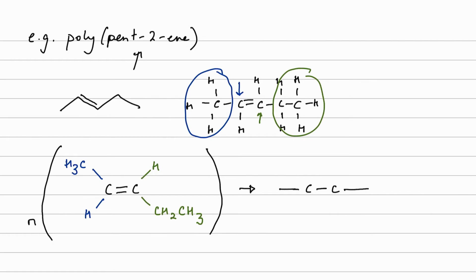We have got CH3 above, hydrogen below. Second carbon, hydrogen above, CH2, CH3 below. And then finishing off with square brackets.